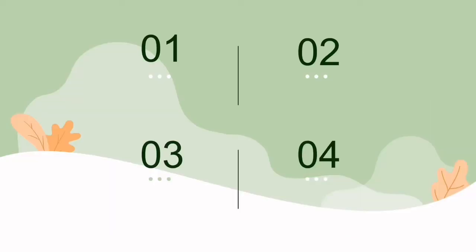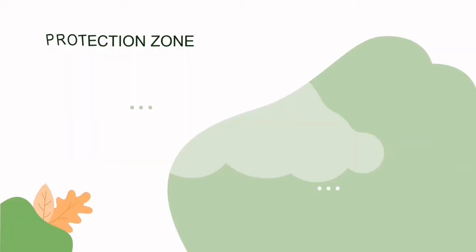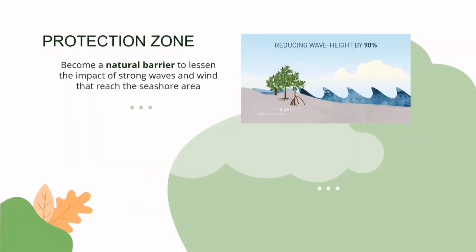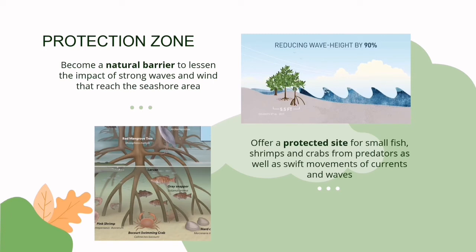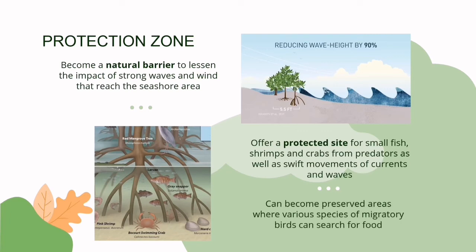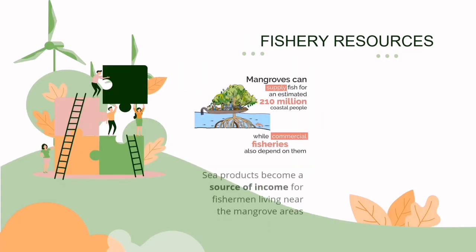The importance of the mangrove ecosystem: it acts as a protection zone and provides fishery resources, forestry resources, and food and medicine resources. As a protection zone, it becomes a natural barrier to lessen the impact of strong waves and wind reaching the seashore, offers a protected site for small fish, shrimps, and crabs from predators and swift currents, and can become preserved areas where various species of migratory birds can search for food.